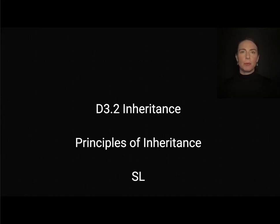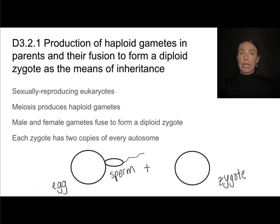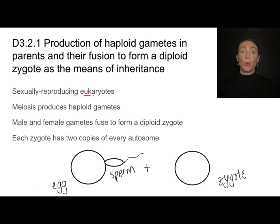In this video, we'll be discussing principles of inheritance, which is standard level content from D3.2 on inheritance. In our discussion on inheritance, we are going to be limiting what we learned to sexually reproducing eukaryotes. So we won't be talking about asexual reproducers or prokaryotes.